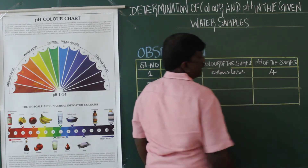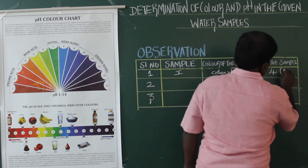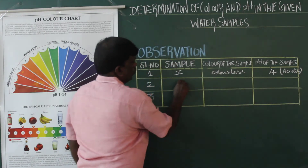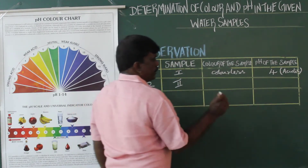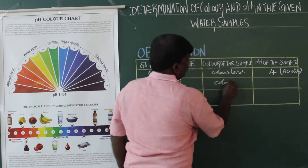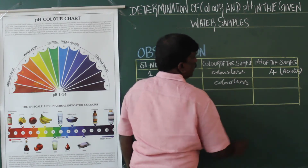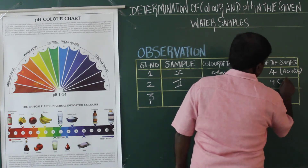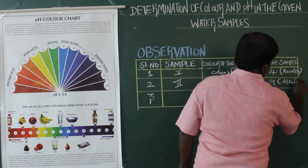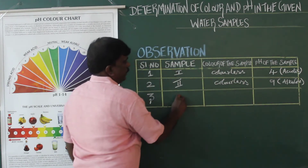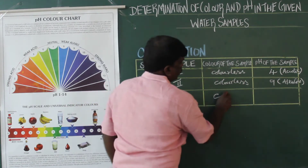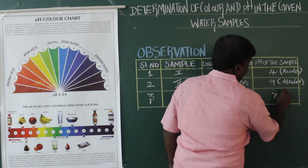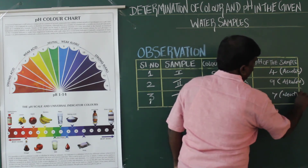Sample 1 with pH 4 means it is acidic. For sample letter 2, the solution is also colorless and the pH result is 9, so that means it is alkaline. The third solution is also colorless and we get pH 7, which means it is exactly a neutral solution.